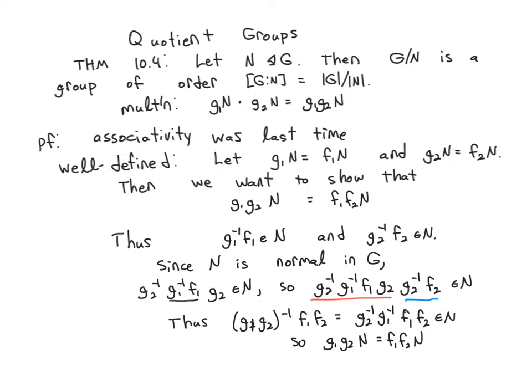So let's prove well-definedness. Let's assume that these two cosets are equal, and these two cosets are equal. Notice I'm using little f and little g specifically because I have to use a different letter, and I'm using subscripts to help me keep track of which elements go together. So g1 and f1 are in the same coset, and g2 and f2 are in the same coset.